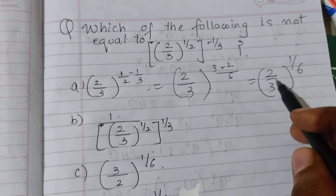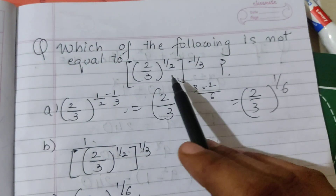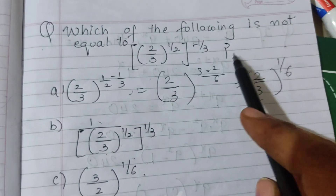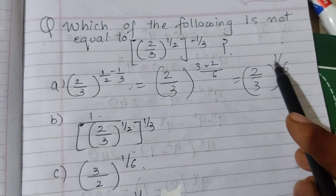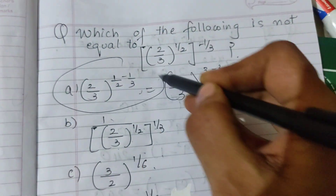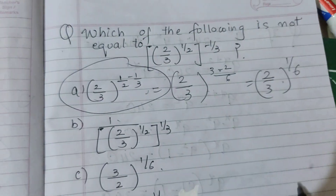But the original expression equals (2/3)^(-1/6), not (2/3)^(1/6). So option A is NOT equal to the original expression. This is the correct answer.